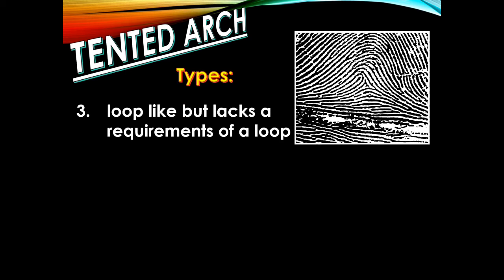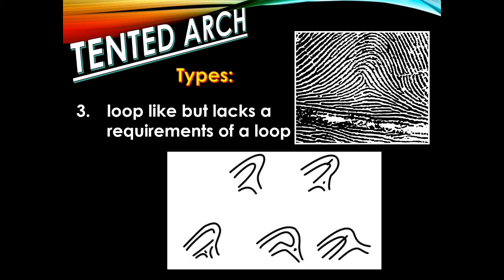The last type of tented arch is the loop-like or looping type, wherein it lacks the full requirement of a loop. A looping-type tented arch possesses two out of the three characteristics of a loop pattern, meaning one characteristic of a loop is missing from the fingerprint pattern, making it a tented arch pattern instead.